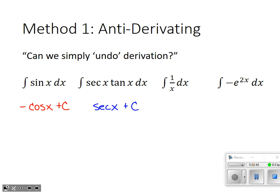Next: the integral of 1 over x. This is tempting to call x to the negative first power and try to backwards-engineer a power rule. However, since this is simply 1 over x, the derivative of natural log x leads to 1 over x, so the answer is ln x + c. It's only when it's 1 over something to a first power that we want natural log; otherwise it's a power rule.